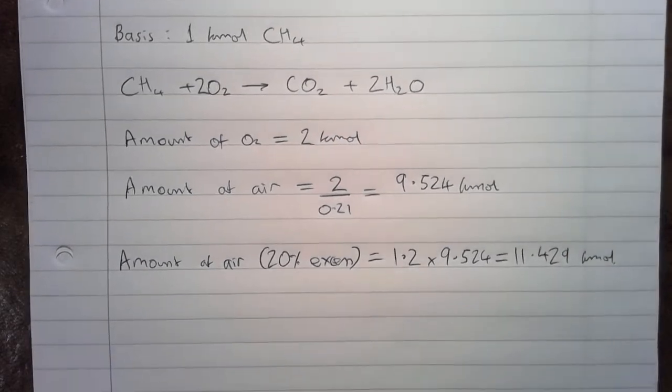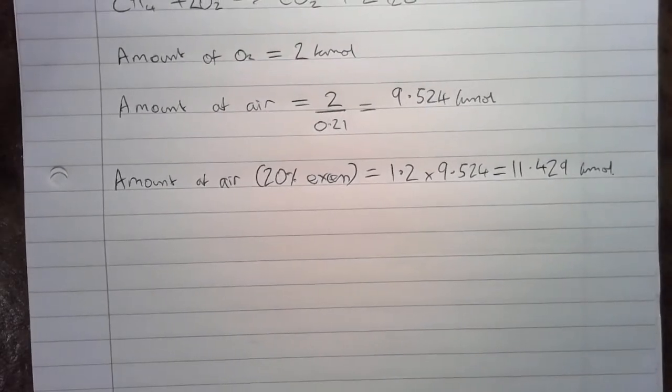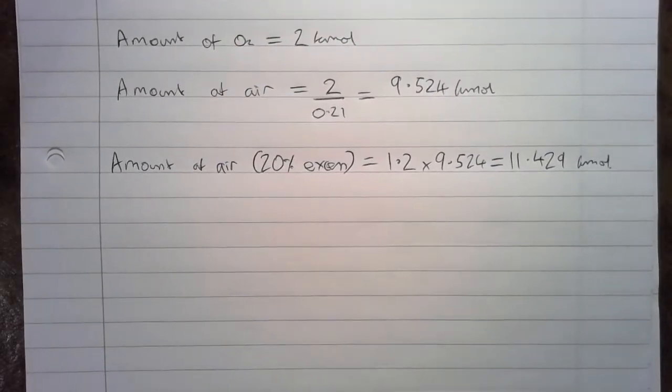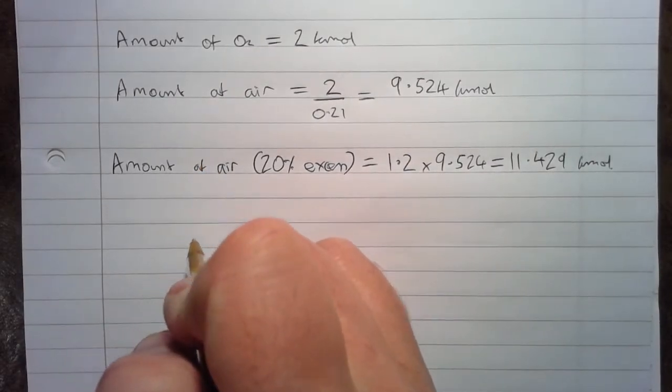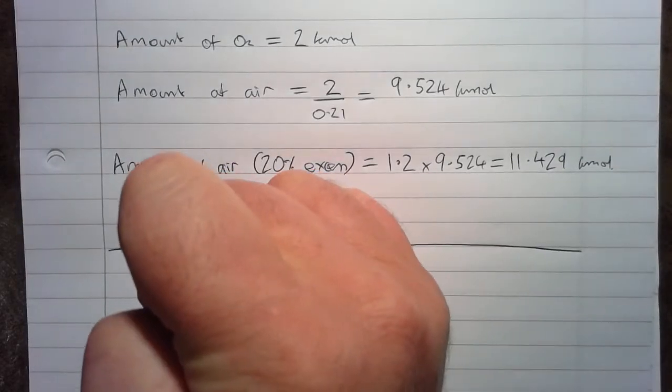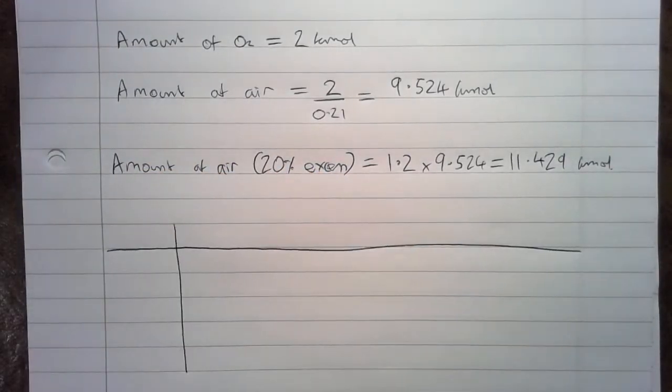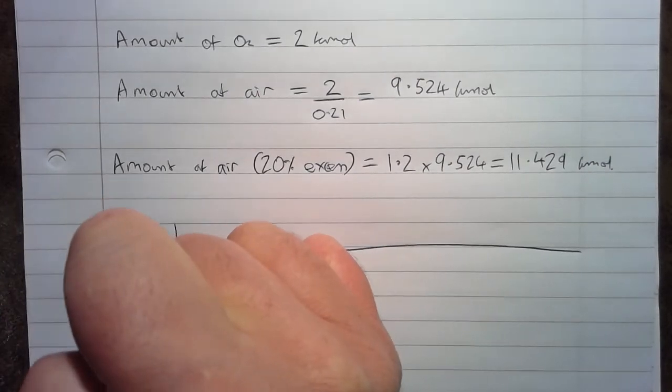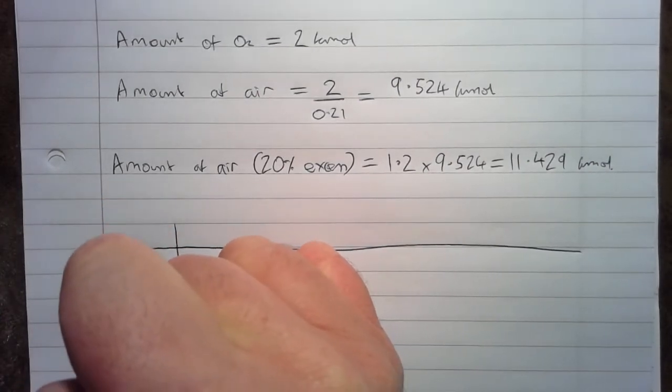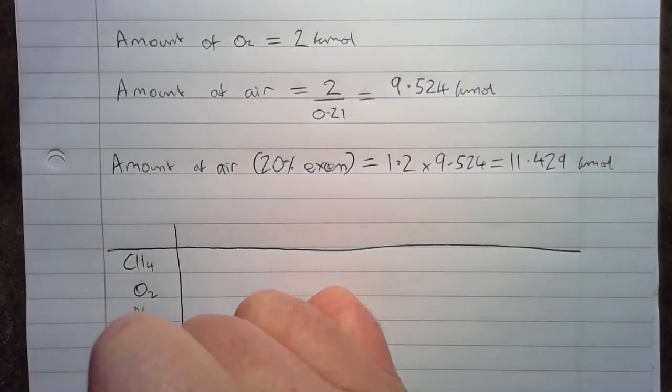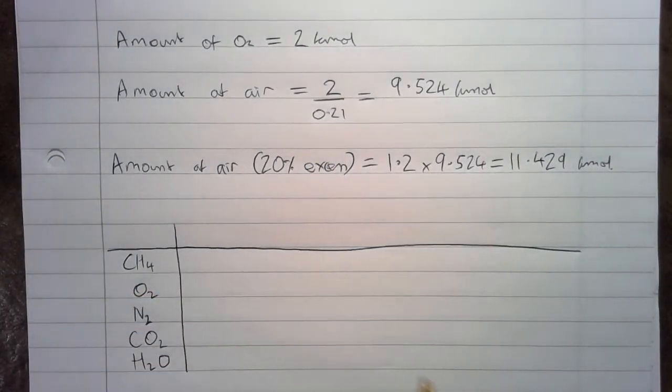We can use this information to start to work out the material balance in our combustion reaction. We'll do this by having a table. In the first column, we will have the components: CH4, O2, N2, CO2, and H2O.